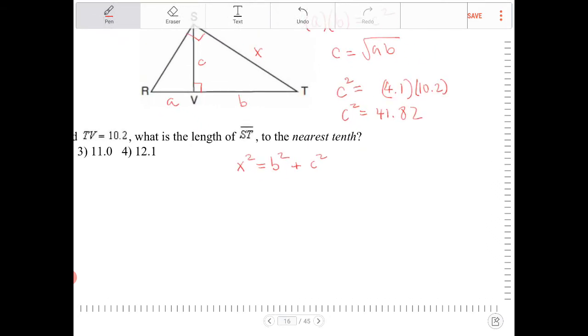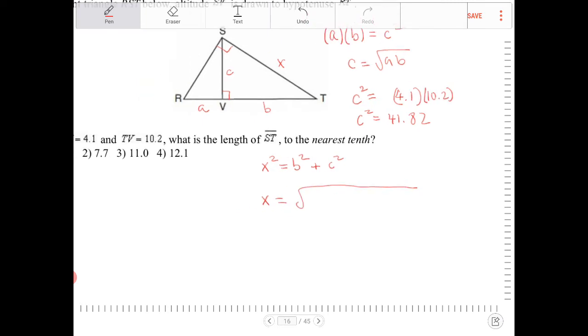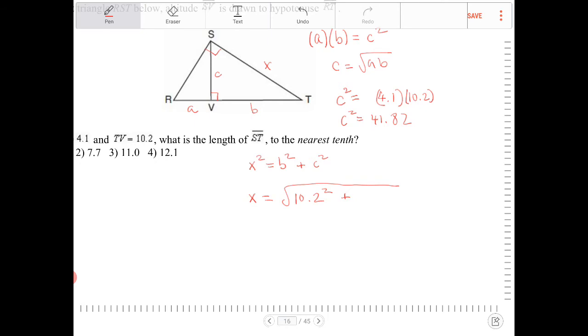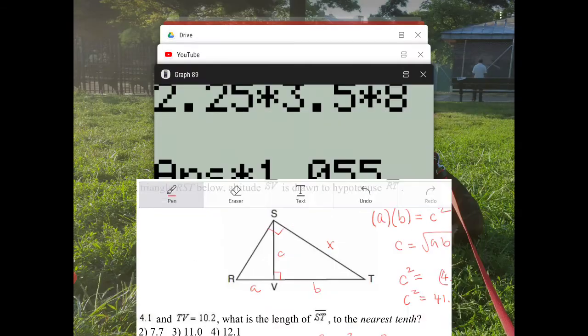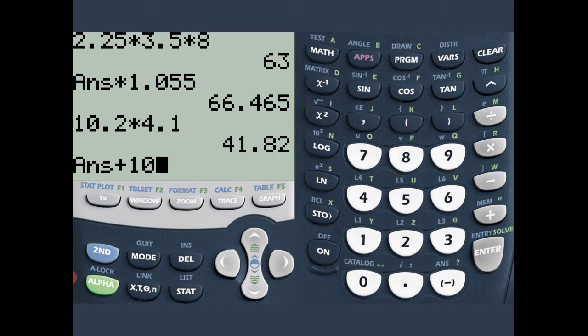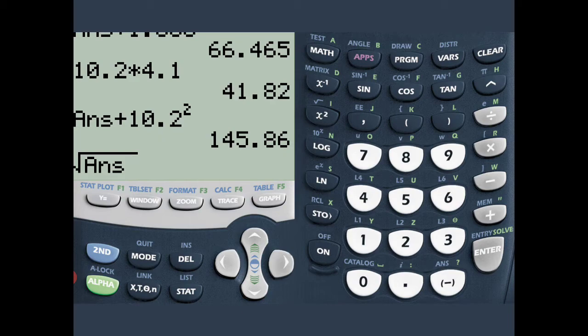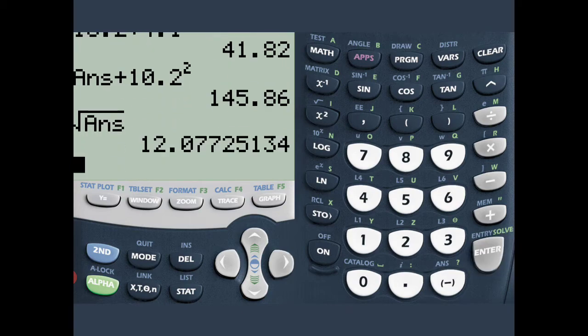So therefore, what I'm going to do is I'm going to take the square root of B squared. Well, B is going to be 10.2 squared plus C squared, which is 41.82. And I'm going to take the square root of that. So I'm going to punch that into the calculator now. So I'm going to take this plus 10.2 squared. I get 145.86. I'm going to take the square root of that.